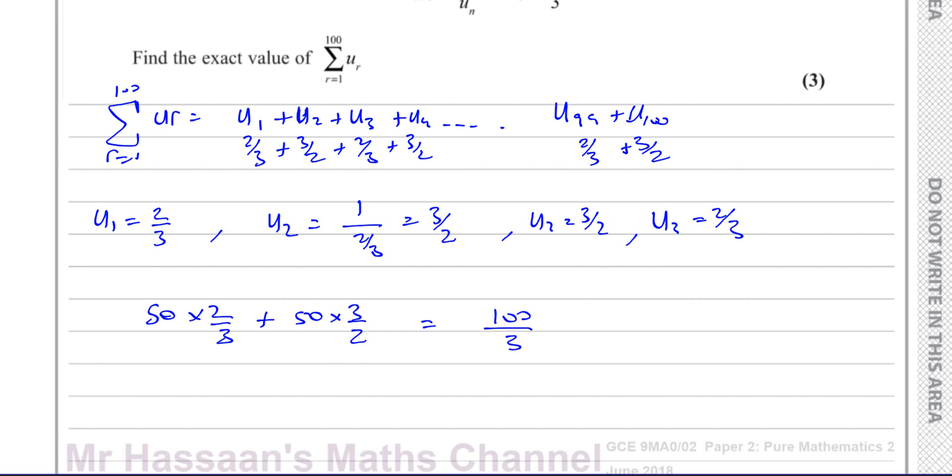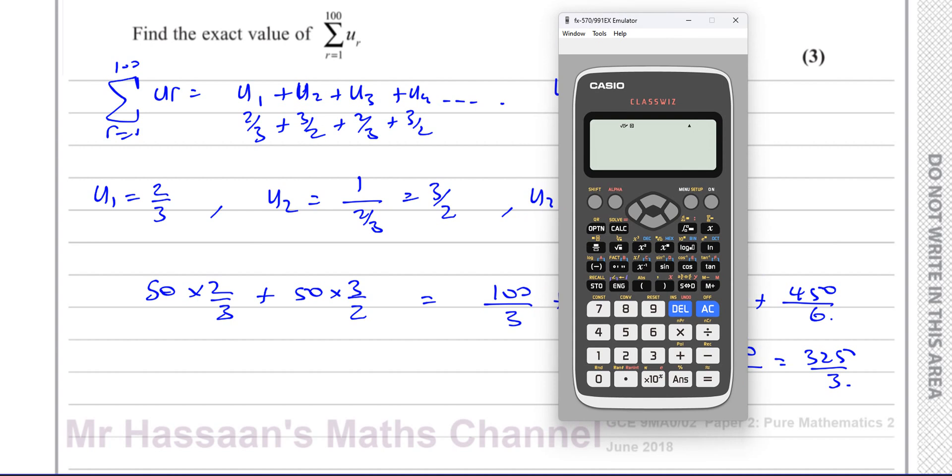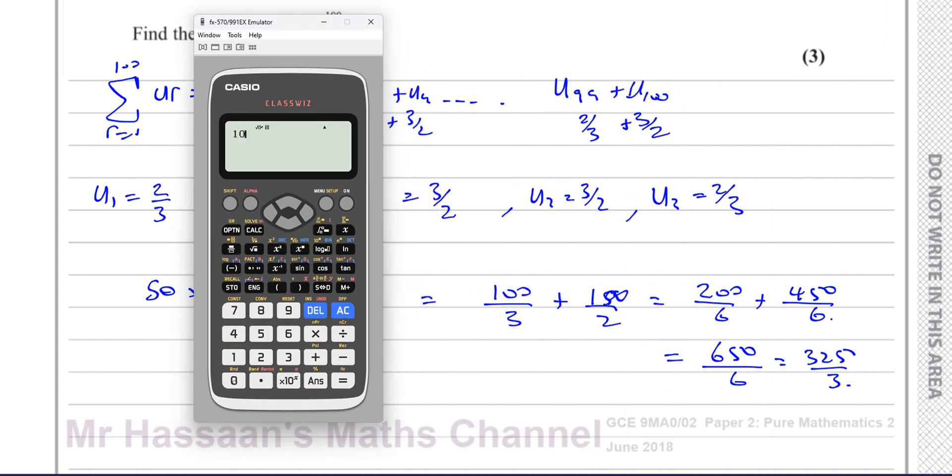That's 100 over 3. They want us to give the exact value, so we shouldn't round it, plus 150 over 2. So that's going to be over 6. That's going to be multiplied by 2. That's 200 over 6 plus 450 over 6. So that's going to be 650 over 6 divided by 2. That's 325 over 3. Let's just make sure of that. We have 100 over 3 plus 150 over 2. Yeah, 325 over 3, there's the answer.